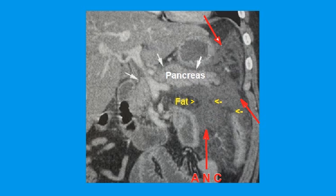Here's a case of complicated pancreatitis. The relatively normal pancreas parenchyma indicates the interstitial pancreatitis has improved, but there are peripancreatic fluid collections that are heterogeneous, with areas of interspersed fat and no discrete wall. This is an acute necrotic collection — heterogeneous, no discrete wall.